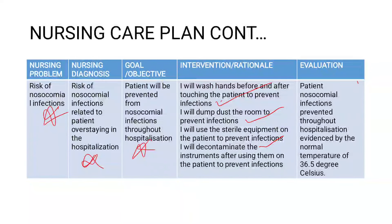In terms of evaluation, remember, even if the problem is a risk problem, on evaluation it should always have an evidence. So on this one, you can say patient's nosocomial infections prevented throughout hospitalization, evidenced by normal temperature of 36.5 degrees Celsius.